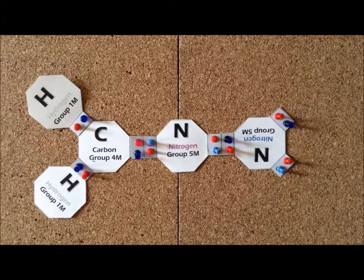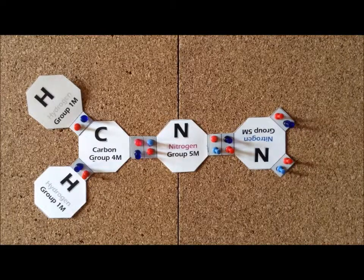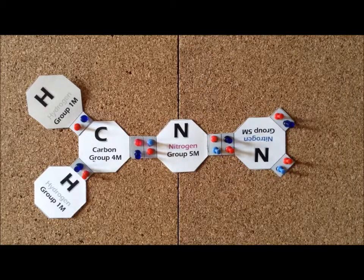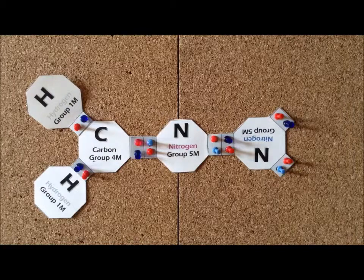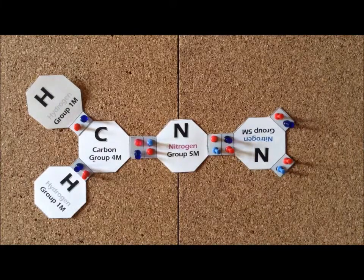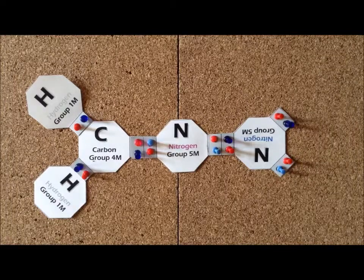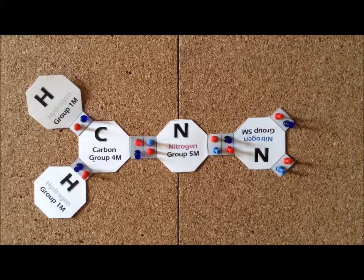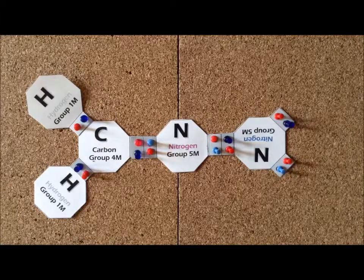The last structure that we will look at in this video is diazomethane, CH2N2. The two nitrogens each contribute 5 valence electrons. Carbon contributes 4, and each of the two hydrogens contributes 1. So again, we have another 16 electron system.